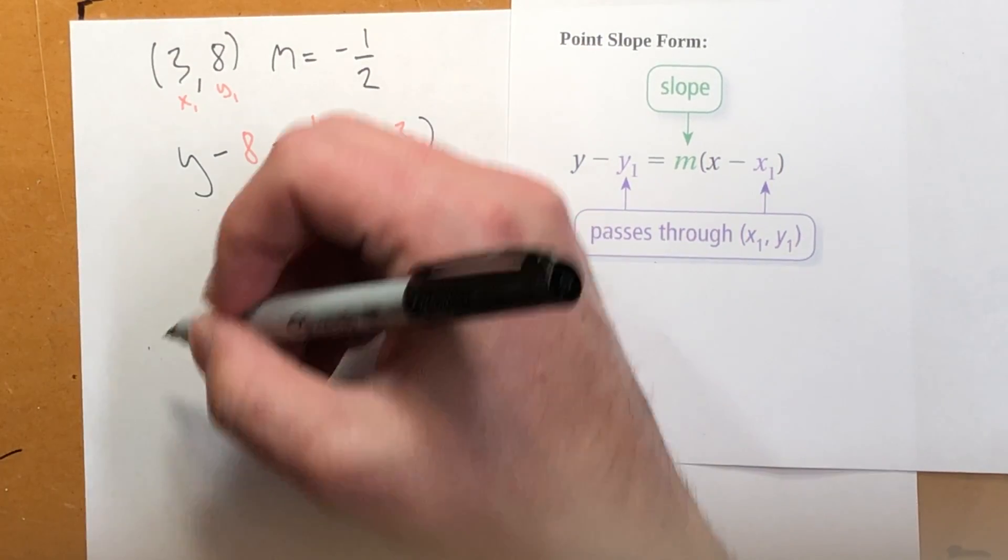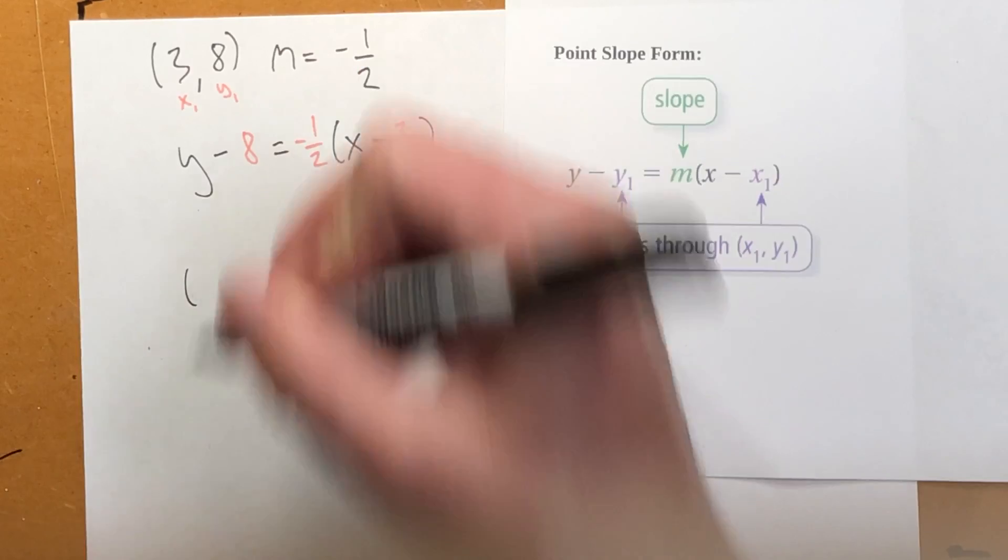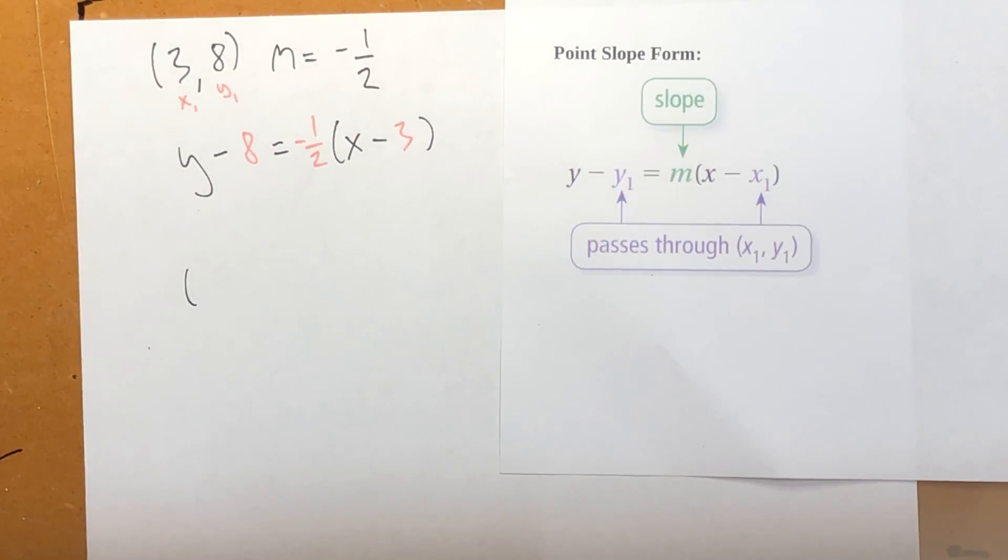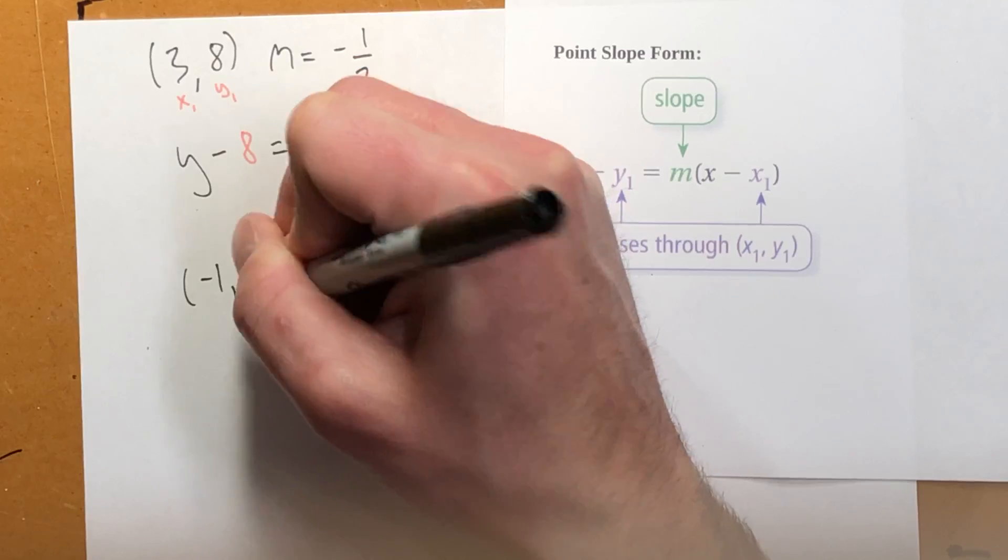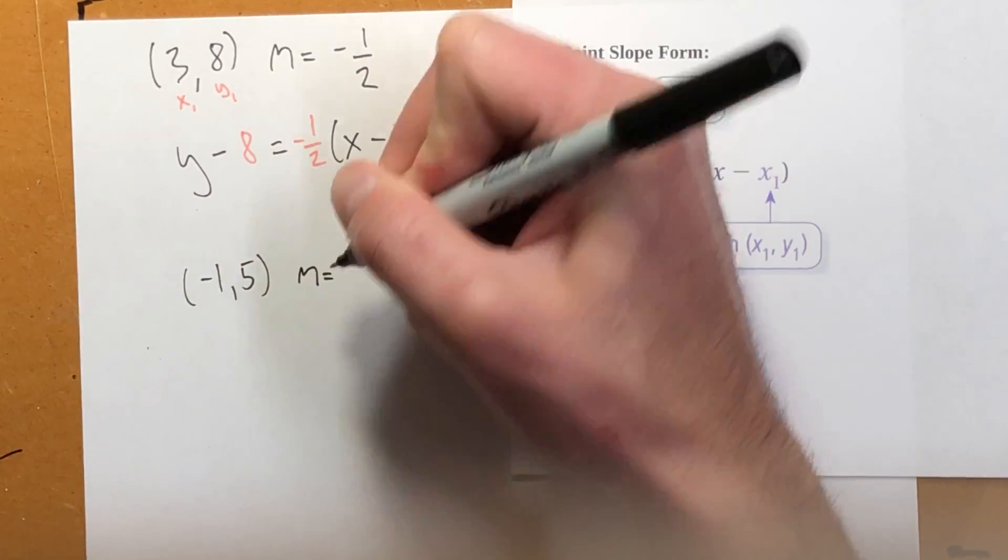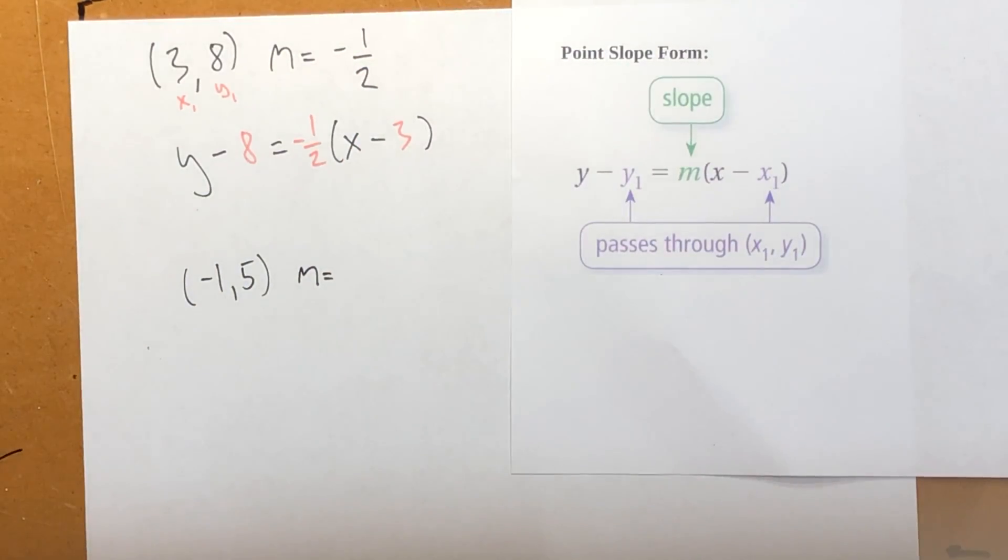Now, the next example is through the point negative 1, 5, and it has a slope of 3.